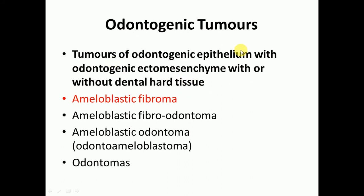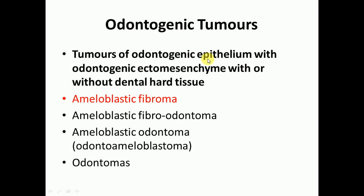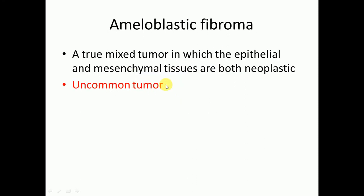Here we have epithelium as well as ectomesenchyme, so they will be mixed tumors. This group includes ameloblastic fibroma, ameloblastic fibro-odontoma, ameloblastic odontoma, and odontomas. Today we will discuss ameloblastic fibroma — it is a true mixed tumor because it includes both epithelium and ectomesenchyme.